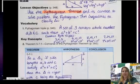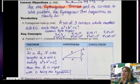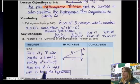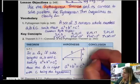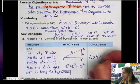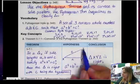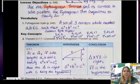The converse of the Pythagorean Theorem is just what you'd expect: it takes the Pythagorean Theorem and flips it around. So if in a triangle the side lengths a, b, and c satisfy a squared plus b squared equals c squared, then the triangle is a right triangle with c being the hypotenuse. Remember, the hypotenuse is always across from the right angle.